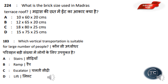What is the brick size used in a Madras terrace roof? The answer is Option D — 15×75×25 cm. Which vertical transportation is suitable for a large number of people? The answer is Option B — Ramp.